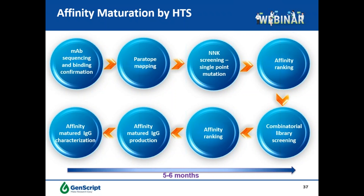Our affinity maturation platform utilizes our patented high-throughput FASEBA screening approach and guarantees to improve affinity by at least tenfold. After the antibody sequence is confirmed with binding to antigen, we perform paratope mapping to identify key residues for antibody-antigen interaction. An NNK single-point mutation library is built and screened to select top binders, then a combinatory library is built and screened to select the best binders. The affinity-matured IgG is produced and characterized, and we guarantee improvement of affinity by at least tenfold.